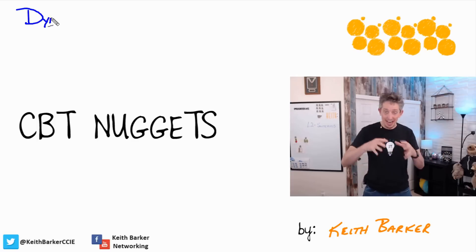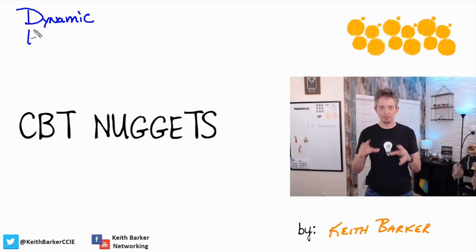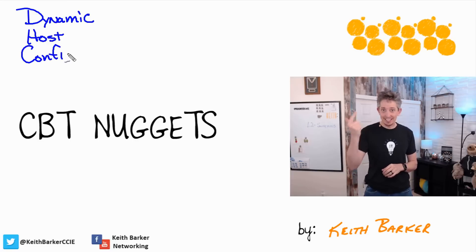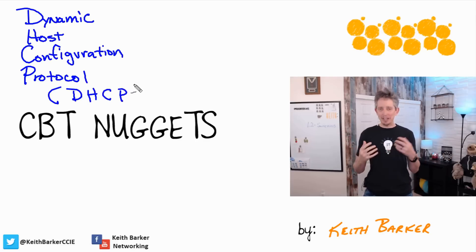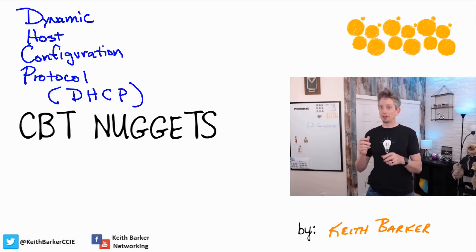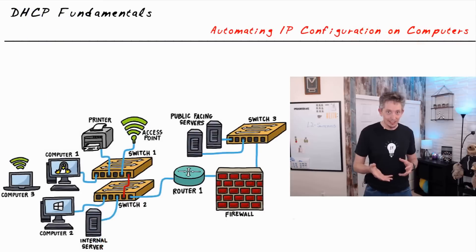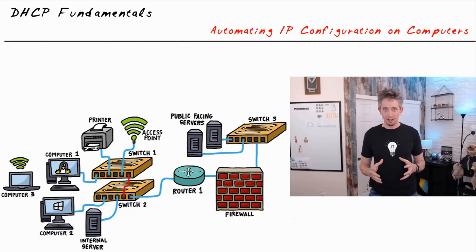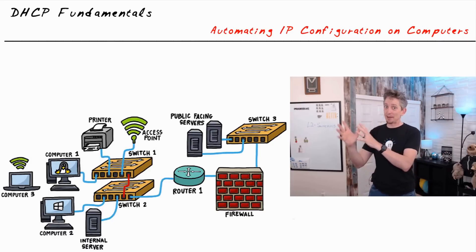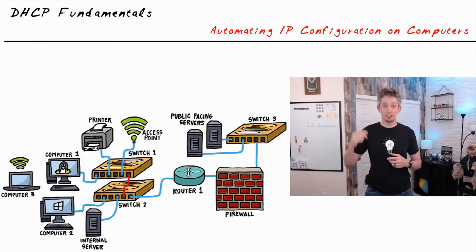In order for a computer to be happy and functional on an IP network, it needs some basic configurations, including an IP address, the mask, the default gateway for forwarding packets off the local network, and the DNS server to resolve IP addresses behind names. If we have to do that all manually — go to computer one, configure it, go to computer two, configure it — it's not only time-consuming, but there's also an opportunity for typos. In this video, I'd like to chat about how we can automate that process by using a protocol called DHCP, which is an acronym for Dynamic Host Configuration Protocol. It basically is a way to automatically assign IP address information to computers without having to do it manually.